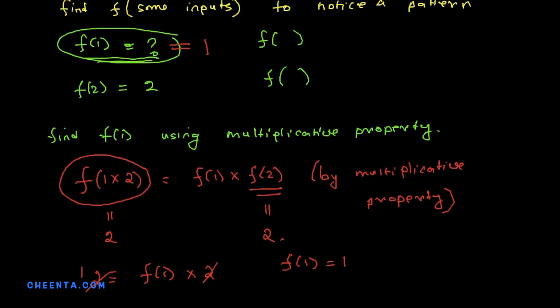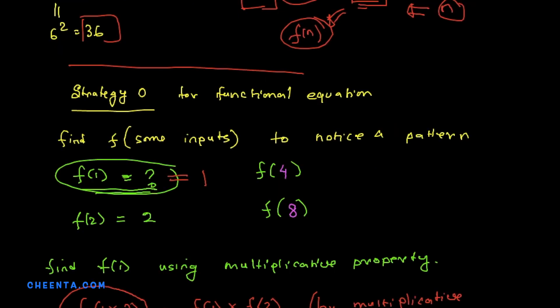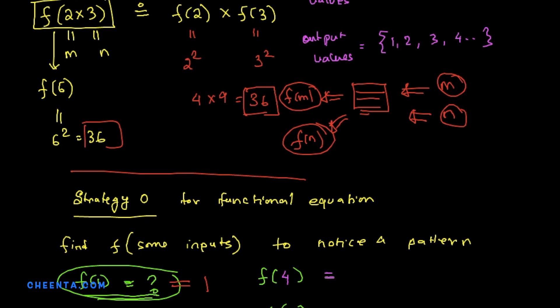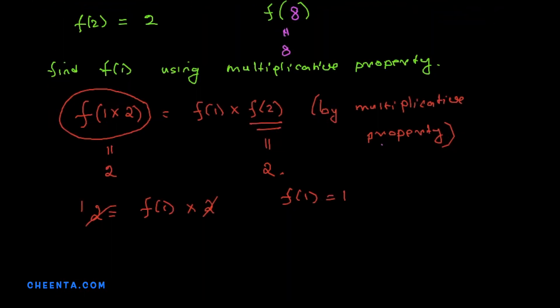Can you find f(4) and f(8)? f(4) = f(2×2) = f(2)·f(2) = 2×2 = 4. And f(8) will be 8 by the same method. In fact, f(16) = 16 exactly. We are seeing a very strong pattern: it looks like f(n) = n.